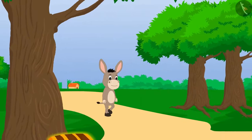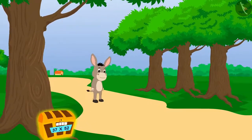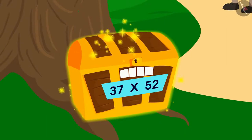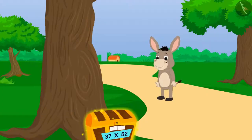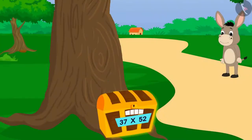Bhola is passing through the forest. He saw a shiny object at some distance. What is this shiny object? It's a box.